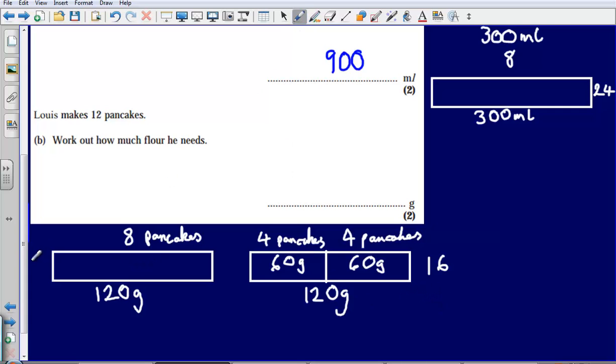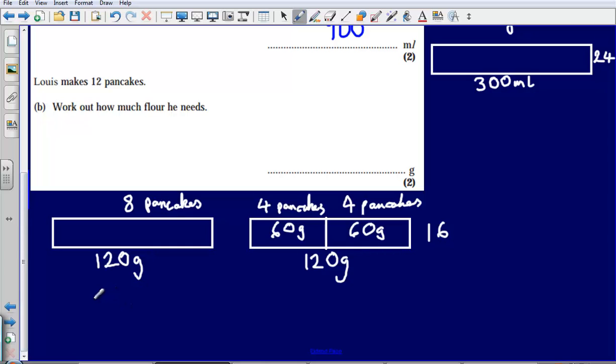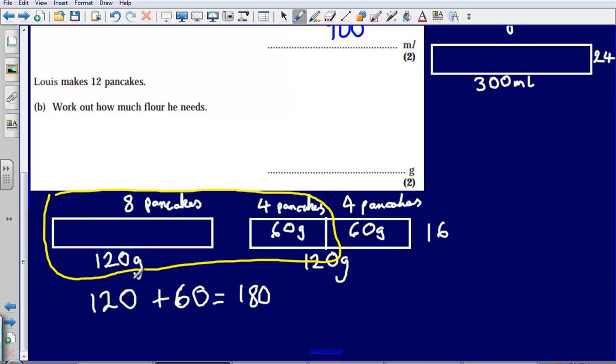Now if I take the 8 pancakes, the 8 pancakes were 120, and then I add on what I need for 4 pancakes, that will get me up to 12 pancakes. Add on the 60, that will leave me with a total of 180. So to make 12 pancakes, I'm going to need 120 grams plus 60 grams. I'm going to need 180 grams in total.